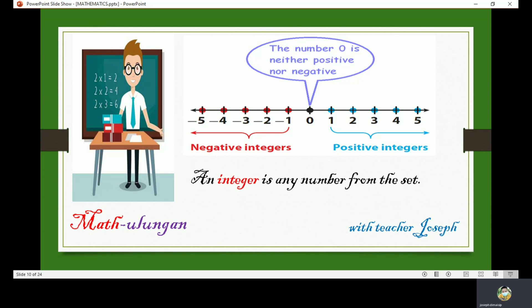Integers that are greater than zero are called positive numbers, and integers that are less than zero are called negative integers. Zero is neither negative nor positive. A minus sign denotes a negative number and a plus sign denotes a positive number. The number line shows the positive and negative numbers.